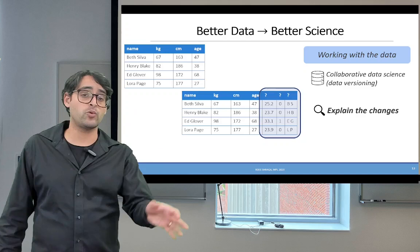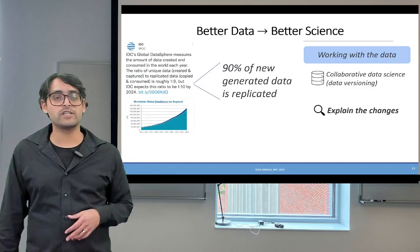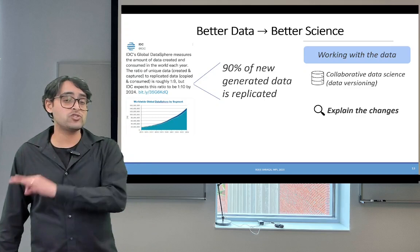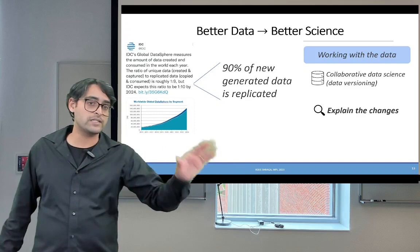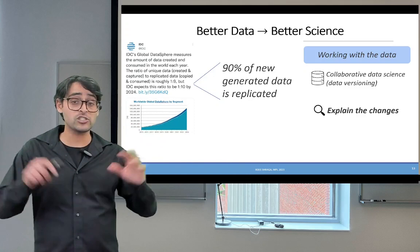You may ask, how relevant is it? Specifically, we follow the IDC, which is the International Data Cooperation. We see that 90% of the new generated data nowadays is actually replicated. Or in other words, 90% of the data that is being generated in heavy masses is actually versions of data that already exist. Using this type of research, we can benefit from understanding the changes that happen to the data, in order to understand better the new data that is being generated on a day-to-day basis.